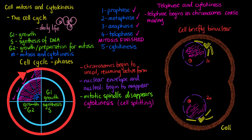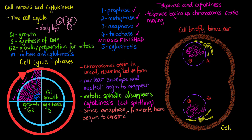Cytokinesis refers to the cell being split apart, and it has its own set of activities all focused around the center of the cell. Since anaphase, filaments have begun to constrict the cell at the center. We have non-muscle myosin and actin forming a framework around the center of the cell, which we call the contractile ring.